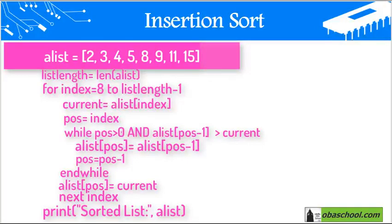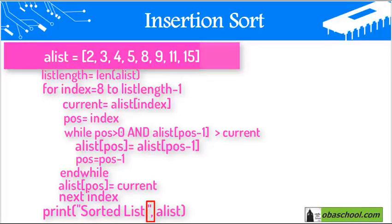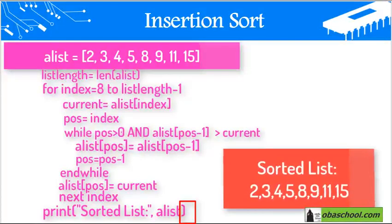We then print the sorted list. We write print with open brackets, put between parentheses the label 'sorted list' to show to the user, then a comma, then the variable a_list which holds the sorted list, and finally close the brackets. This is what the user sees.